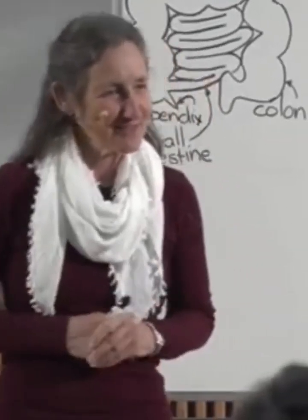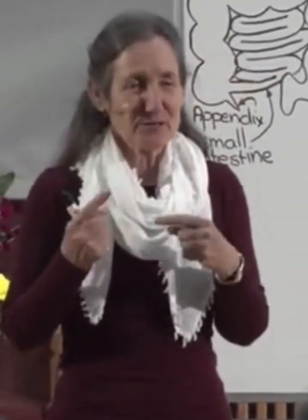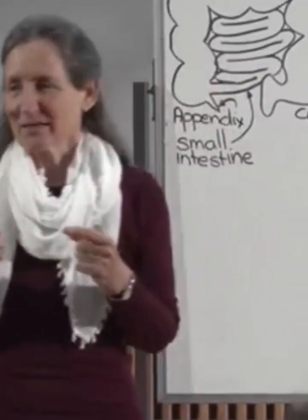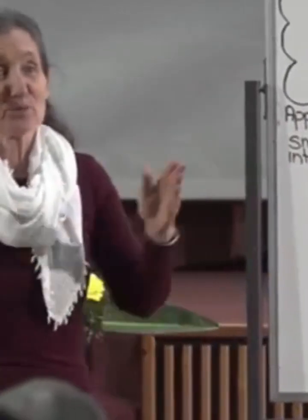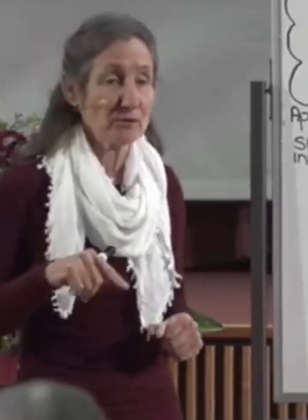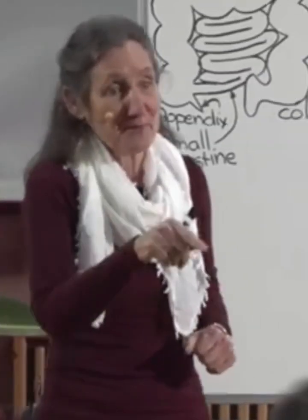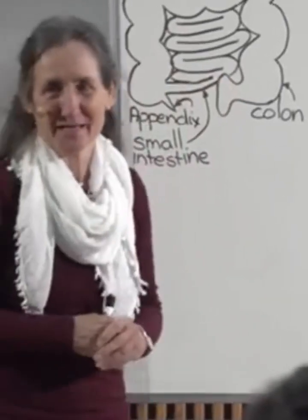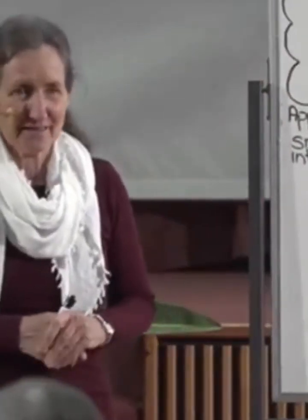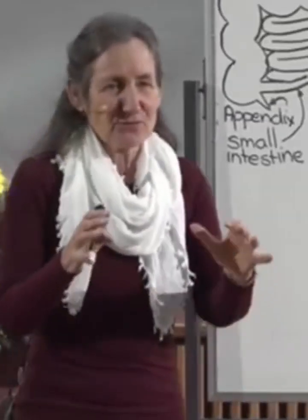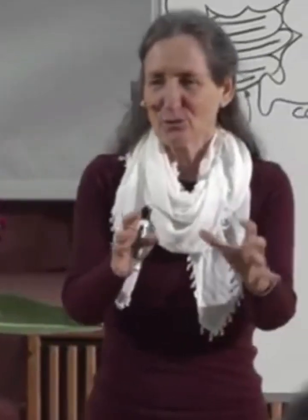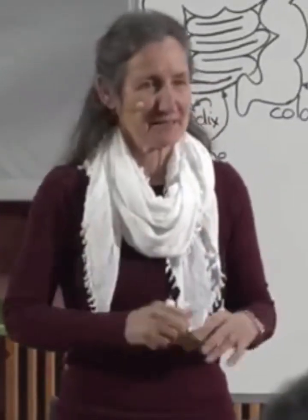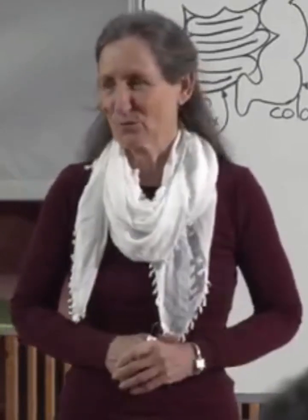Your gastrointestinal tract is a hollow tube, and anything that goes into that hollow tube is not part of you or me until it gets broken down to tiny substances absorbed into the blood — then it becomes part of you and me. Last night when we looked at the liver, we had a look at what happens when it gets absorbed into the blood. We actually followed the journey of how it gets into the cell. But tonight we're going to have a look at the amazing process that transforms the food that's on your plate to microscopic little substances that then get absorbed into the blood.